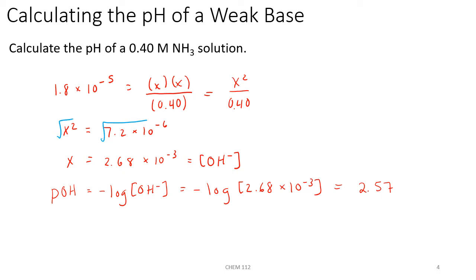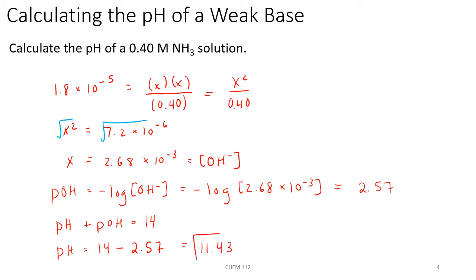Our relationship between pOH and pH is that pH + pOH = 14, which is the pKw of water. So we rearrange: pH = 14 − pOH = 14 − 2.57 = 11.43. As expected, our pH is greater than 7 because the solution is basic. That should be the double check at the very end — make sure you get a pH in the basic range because we had a weak base solution.